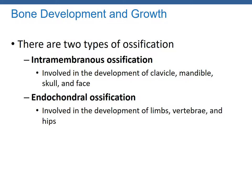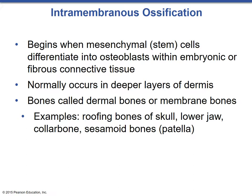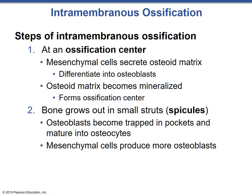Intramembranous ossification begins when stem cells differentiate into osteoblasts within embryonic or fibrous connective tissues. This happens in the deepest layers of the dermis. Bones formed here are called dermal bones or membrane bones, and examples include the roofing bones of the skull, lower jaw, collar bone, and the sesamoid bones of the patella. We begin at an ossification center, where stem cells secrete an osteoid matrix. This happens about eight weeks post-fertilization in the developing dermis, and the stem cells begin to aggregate, enlarge, differentiate, and form into osteoblasts — the building cells of bone. These osteoblasts release osteoid and begin to calcify the connective tissue, forming the first ossification center.